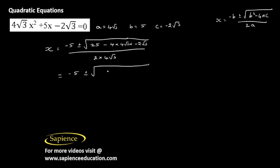Minus 5 plus or minus square root of 25. Minus into minus will be plus. Root 3 into root 3 is 3. 3 times 2 is 6, 6 times 4 is 24, and 4 into 24 is 96, divided by 4 into 2, which is 8 root 3.